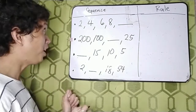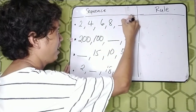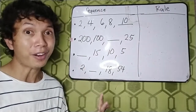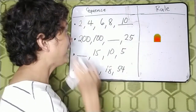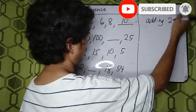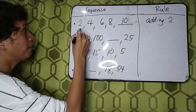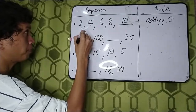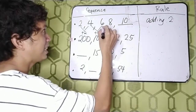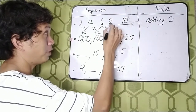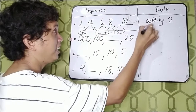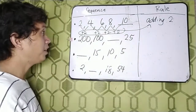Okay, very good. That is 10. How did you get 10? What is the rule or what is the pattern? The pattern is by adding 2. Let's see: 2 plus 2 equals 4, 4 plus 2 equals 6, 6 plus 2 equals 8, 8 plus 2 equals 10. Therefore, the rule is adding 2. So we have here 200,